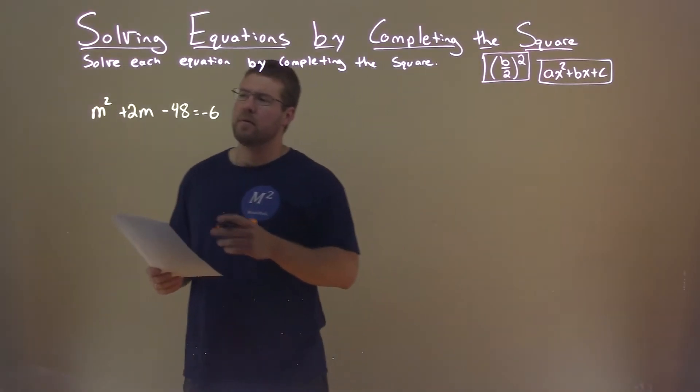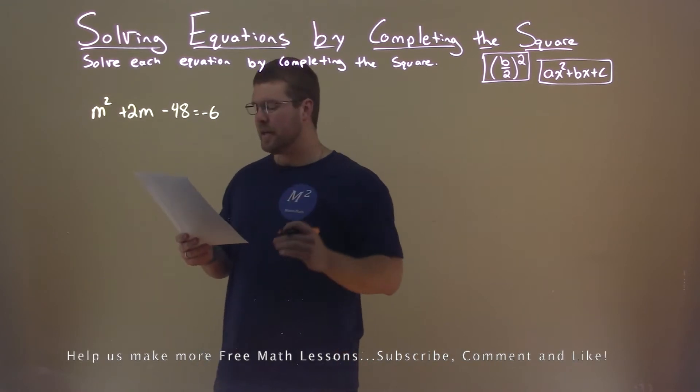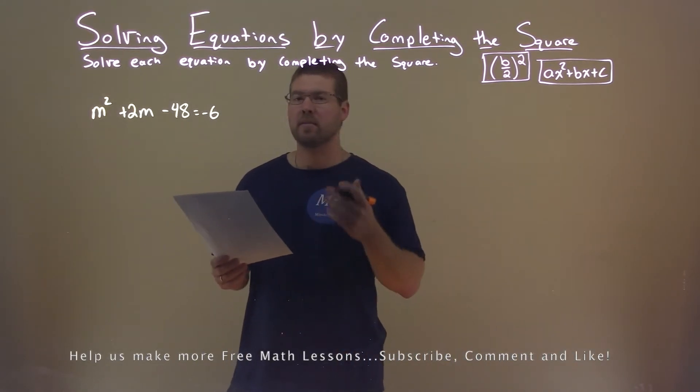We're given this problem right here: m squared plus 2m minus 48 equals negative 6, and we need to solve this by completing the square.